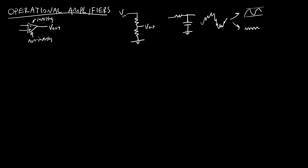As the name implies, operational amplifiers are going to let us amplify a voltage and do a bunch of other cool things — basically doing math with analog circuits. Things like taking a derivative or integral of a voltage, summing voltages, or comparing two voltages to see which one is greater. We're not going to get into the internal workings of how an op-amp works in this course; we're treating it like a magic black box. We'll cover operations like amplify, differentiate, integrate, sum, and compare in subsequent videos.